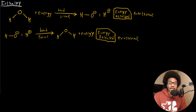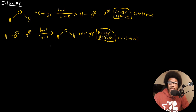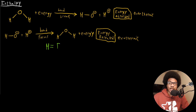We need a way to quantify heat in a very meaningful way for chemical reactions, and that's where enthalpy comes into play. Thermodynamically, enthalpy is defined as the total energy of your system plus pressure times volume — E plus PV. This is the thermodynamic definition of enthalpy.